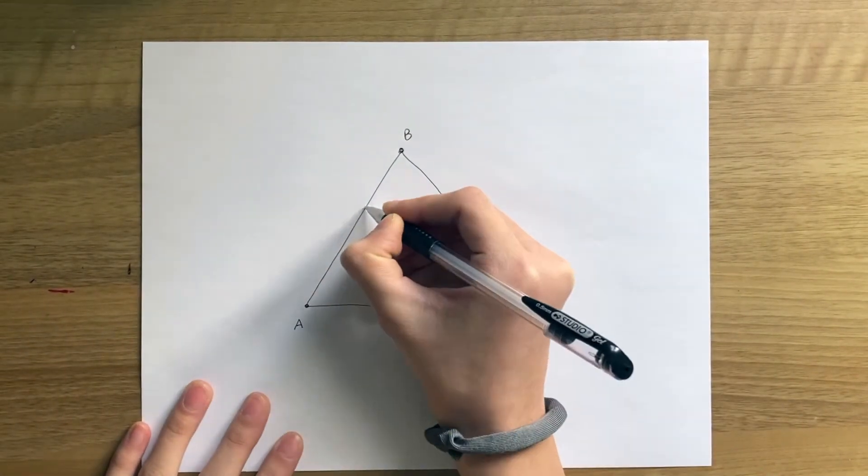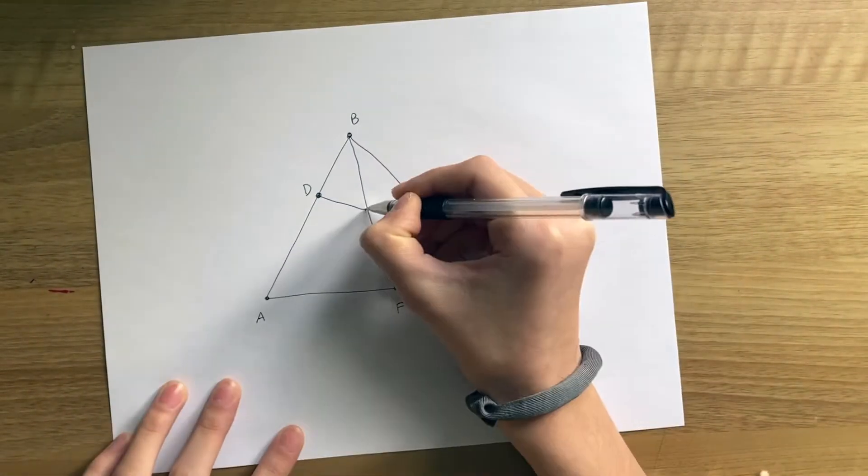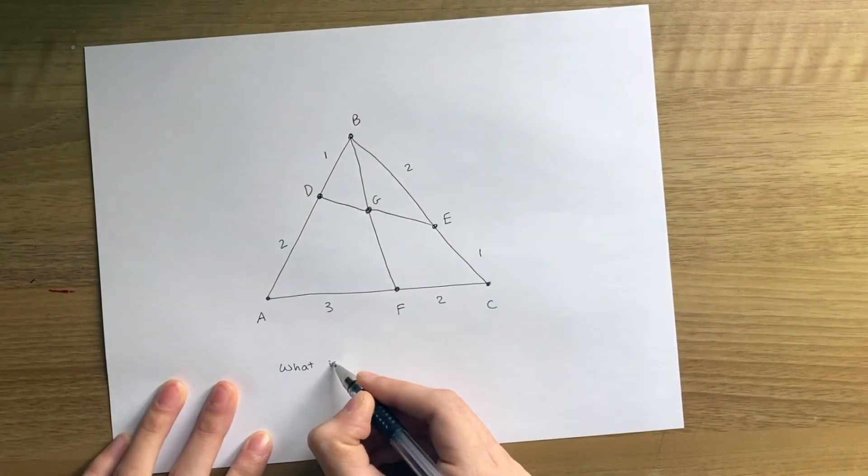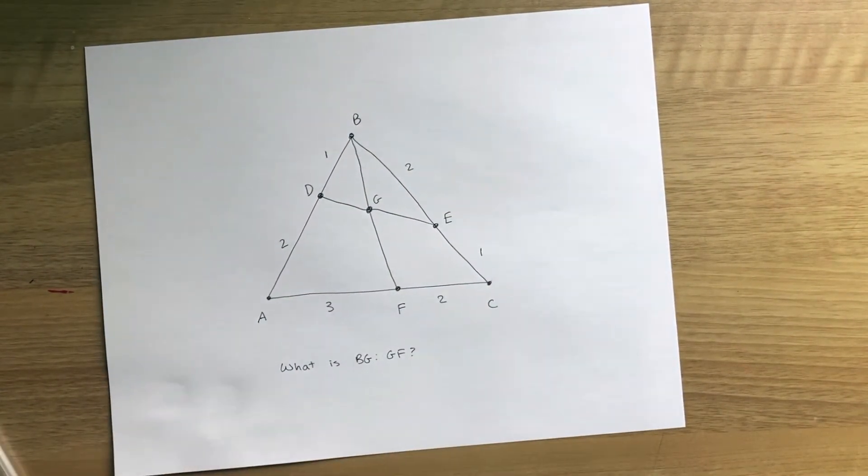Mass points with splitting masses is one of the most powerful and amazing tools in geometry. It can be used to solve problems like this one. Today, we'll be explaining not only how to use it, but why it works.